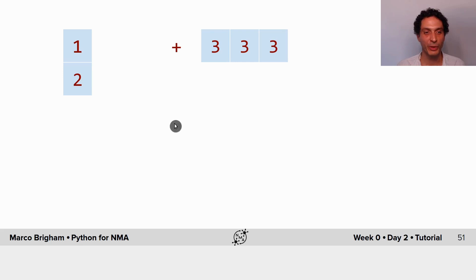But what if we add, say, this 2D NumPy array with only one element in each row to this 1D NumPy array that has three elements and one row.